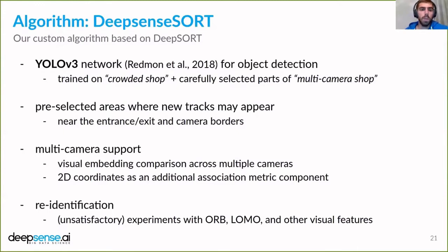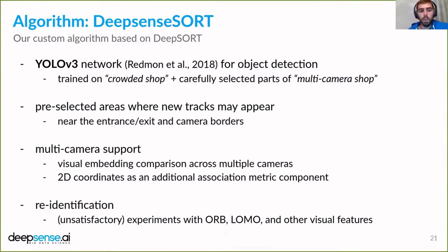We also added several features to DeepSORT. We added the ability to pre-define areas in each camera where new tracks may appear, because without this we noticed many false positive new tracks being initialized out of nowhere in the middle of the shop — we only wanted tracks to appear near entrances, exits, or camera borders. We added support for multiple-camera tracking, including a purely visual comparison without the Kalman filter framework for detections and tracks not matched by Kalman filter and embeddings, to match objects across multiple cameras. We also added 2D coordinate information for each bounding box as an additional component of the association metric.